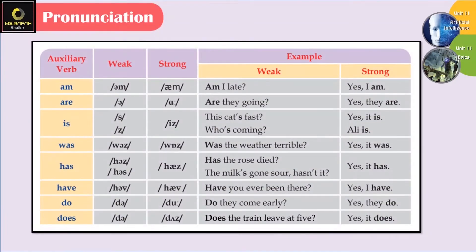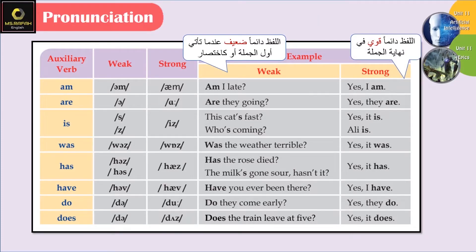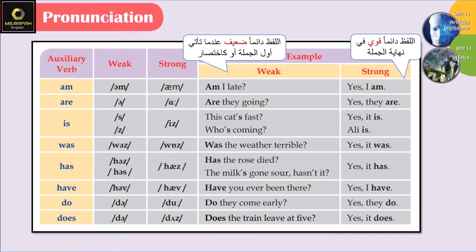Let's see: auxiliary verb 'am' — weak form: 'əm', strong form: 'am'. For example: 'Am I late?' 'Yes, I am' — notice we say 'Yes, I am', not 'Yes, I əm'. For 'are' — weak form: 'ə', strong form: 'are'. For example: 'Are they going?' 'Yes, they are' — notice we say 'Yes, they are', not 'Yes, they ə'.